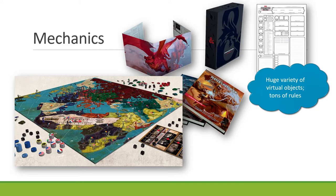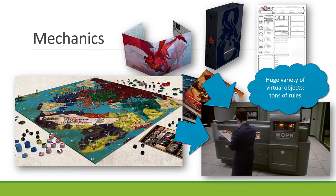There's a huge variety of different games, and we can land anywhere on the spectrum. One interesting thing in the development of computer games is that computers are really good at applying rules to things. We can take games that would be conceptually incredibly taxing for the player — requiring remembering all the rules and keeping track of objects — and put it all on the computer, and the computer will be incredibly happy to keep track of all of this. That is what often ends up happening: the higher the complexity of rules, actions, and objects, the more likely we will end up implementing the game on a computer to relieve the player of the cognitive burden.